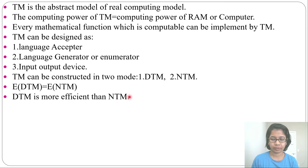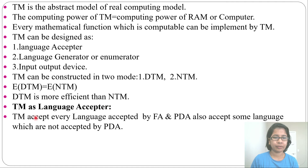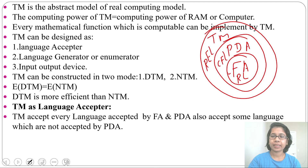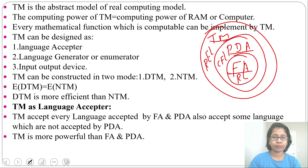Deterministic Turing machine is more efficient than non-deterministic Turing machine. As a language acceptor, a Turing machine accepts every language accepted by FA and PDA, and also accepts some languages not accepted by PDA. For regular language you can design FA, for context-free language you can design PDA, and for recursively enumerable language you can design a Turing machine. FA is a subset of PDA and PDA is a subset of Turing machine, so languages accepted by FA and PDA can also be accepted by Turing machine, plus additional languages that PDA cannot accept.